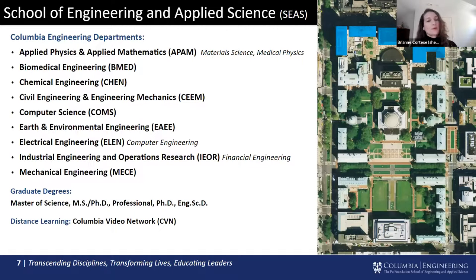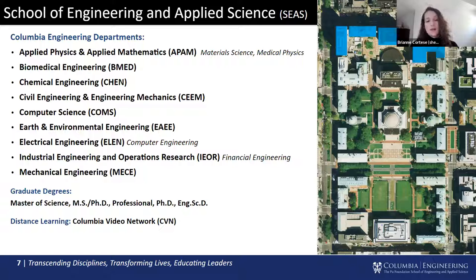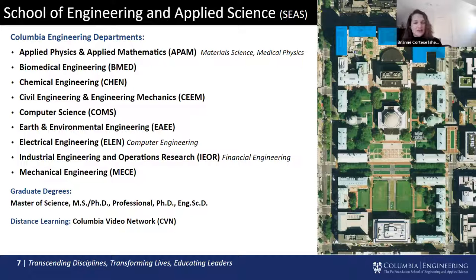The interdisciplinary data science program resides in the School of Engineering and Applied Science, also known as SEAS. As data science students, you are engineering students, and your degree will be conferred by the School of Engineering. SEAS has nine academic departments, each offering a wide range of academic programs at the graduate level, from Master of Science up to PhD and Engineering Science doctorate. As a student in the MS in Data Science program, you may have an opportunity to take elective courses offered within these departments, depending on your advisor's approval.